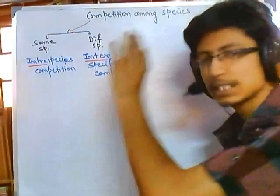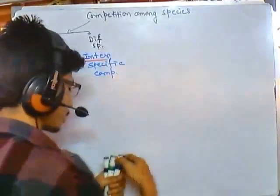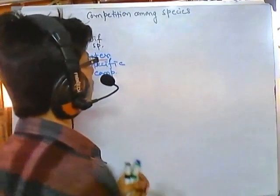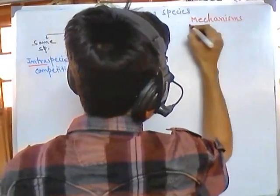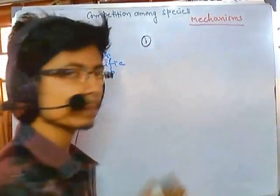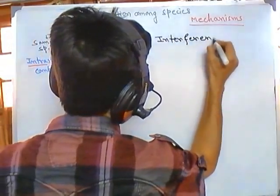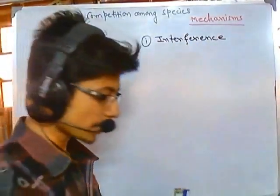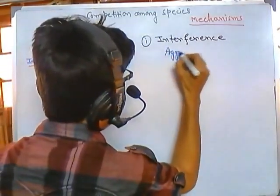Now that we know the classification of competition, we need to learn the mechanisms of competition. In this video I'm going to talk about three mechanisms: interference, depletion, and apparent competition.